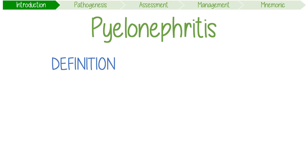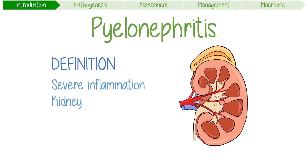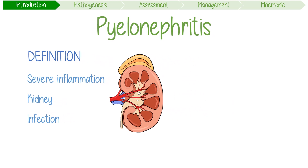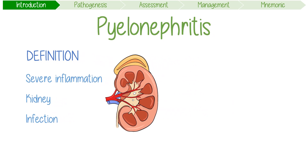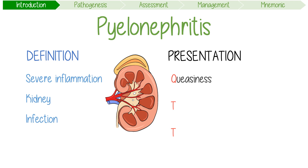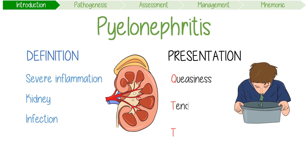Pyelonephritis is defined as a severe inflammatory disease of the kidney, usually caused by an infection. Although it's serious, I like to think of the disease as actually kind of acute-y because it presents with the classic triad of QTT: queasiness and vomiting, tender flanks, and a high temperature.